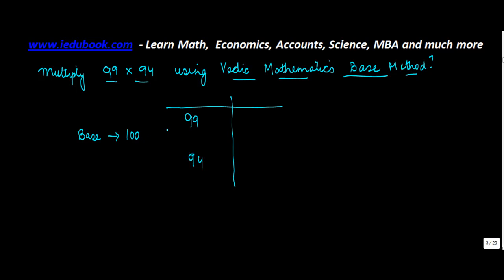So 99 minus 100, let's put the surplus here. 99 minus 100 will give you minus 1. Similarly, 94 minus 100 will give you minus 6. Now I notice that minus 1 and minus 6...